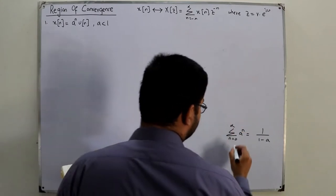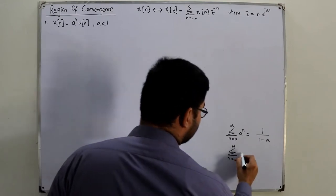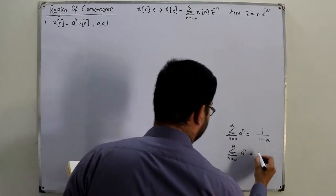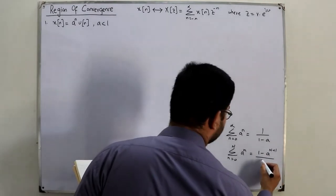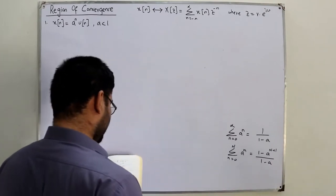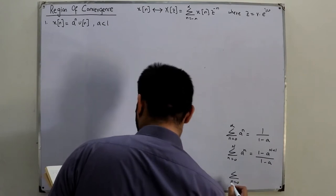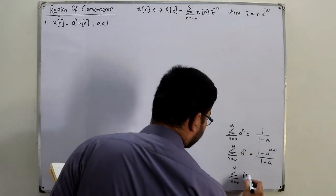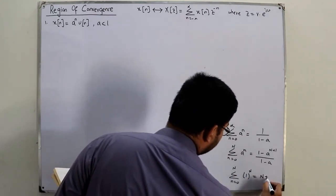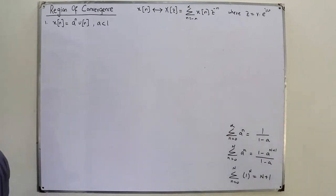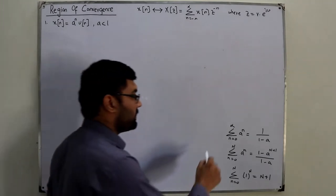The second formula: if you have a finite summation from n = 0 to some finite N of a^n, this equals (1 minus a^(N+1)) divided by (1 minus a). The third formula: summation from n = 0 to capital N of 1^N equals capital N plus 1. These three formulas you need to keep on your fingertips.